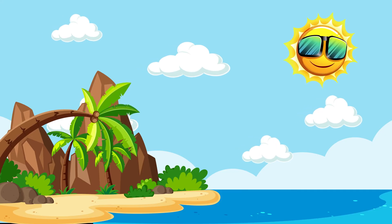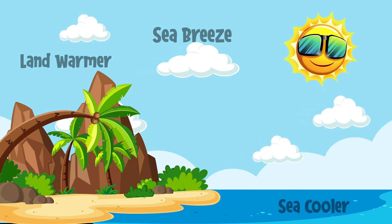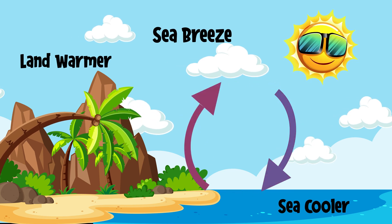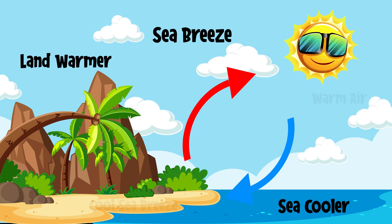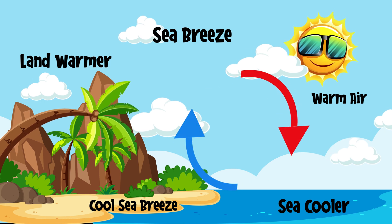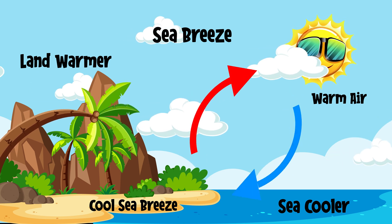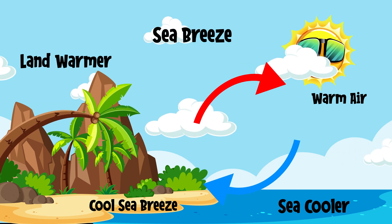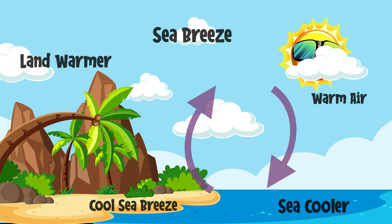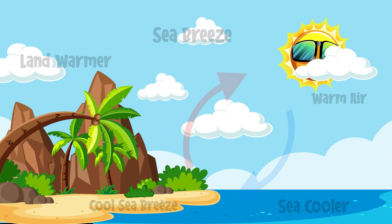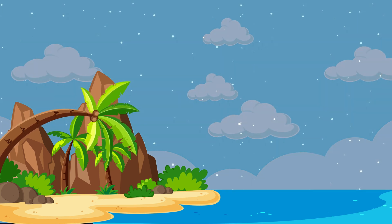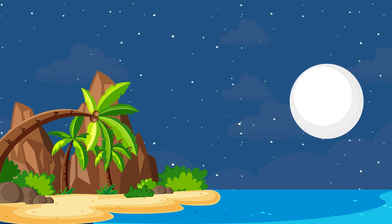A sea breeze is a wind that blows from the sea towards the land. It is caused by the difference in temperature between the land and sea, with the land heating up faster than the sea during the day. This creates a low pressure zone over the land, causing the cooler air over the sea to flow towards the land.